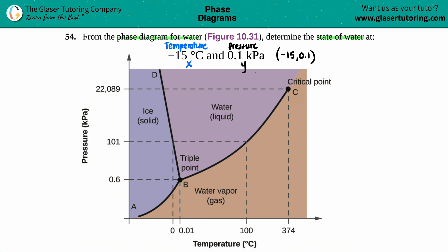Now 0.1 kilopascals is really close to zero. And right down here, this is zero pressure. So 0.1 probably is going to be somewhere around here, very close to the bottom as 0.1.